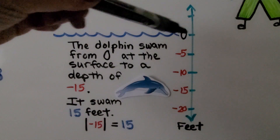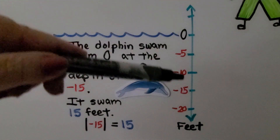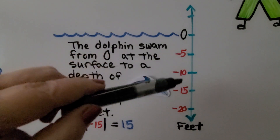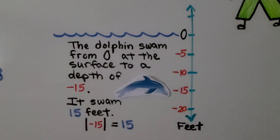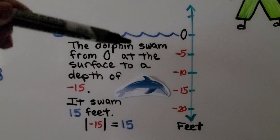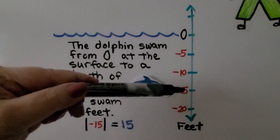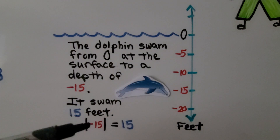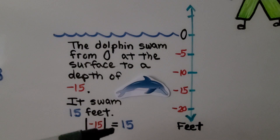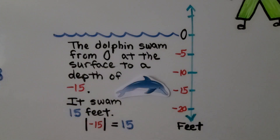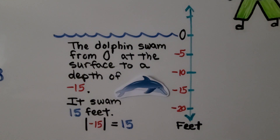Here's the water line — we'll call that zero — on a vertical number line going down by fives: 5, 10, 15, 20 into the negatives (in feet). If the dolphin swam from zero at the surface to a depth of negative 15, the absolute value of negative 15 is equal to 15. We would say the dolphin swam a distance of 15 feet.